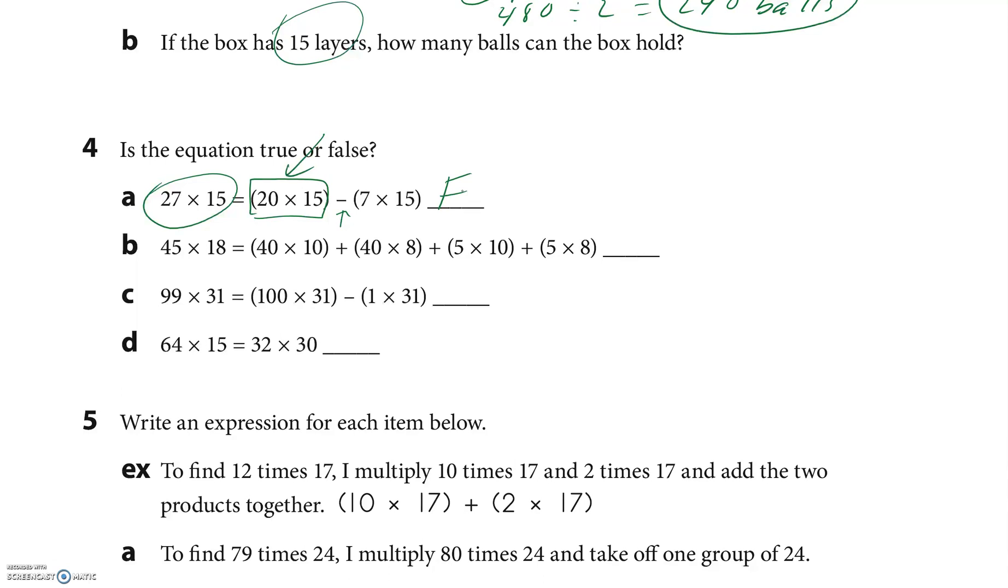If I look at this one right here, I have 45 groups of 18. So this is 40 groups of 10 plus 40 groups of 8, so that would be 40 groups of 18. This right here is 40 times 18, and then we have 5 groups of 10, 5 groups of 8, so that's 5 groups of 18. And we wanted 45, I think it's true.